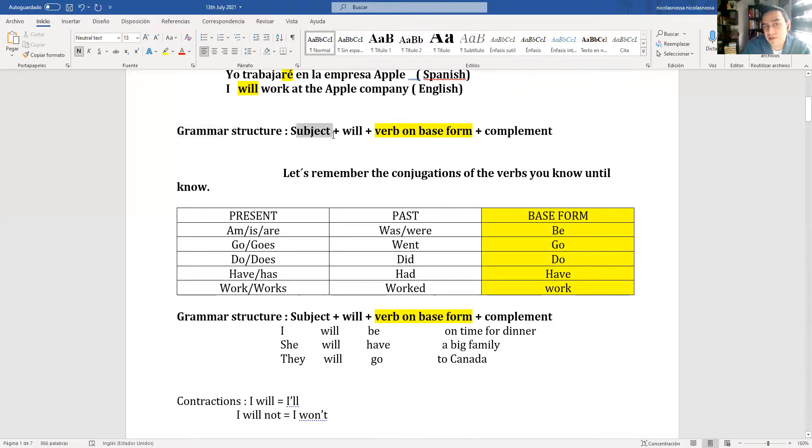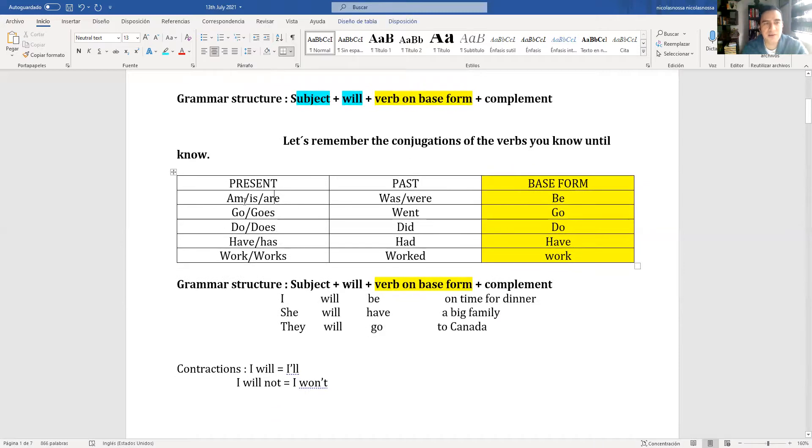This is the grammar structure: subject plus will, which is my modal and auxiliary, plus the verb on the base form plus complement. The base form of the verb: for to be, the base form is be; for present go/goes, the past is went, the base form is go.